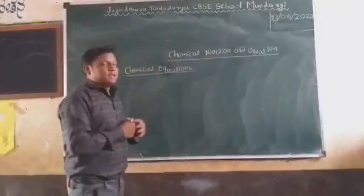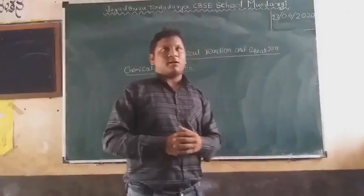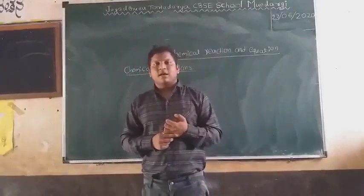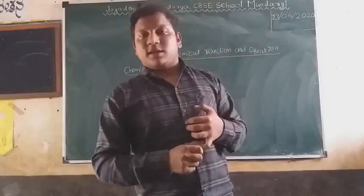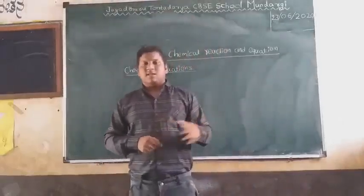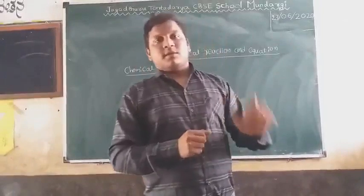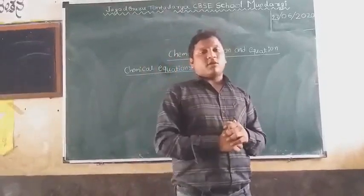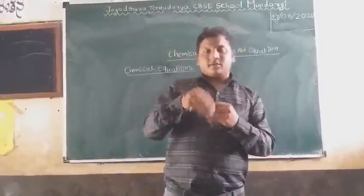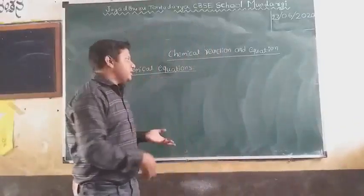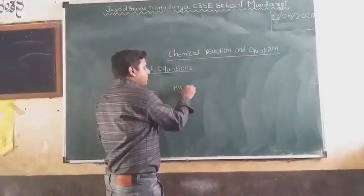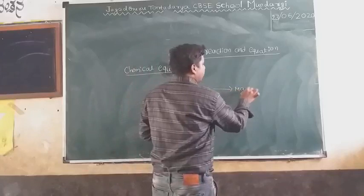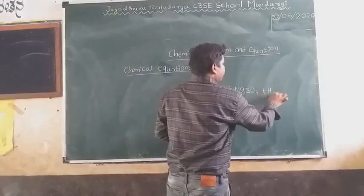There is one more point about chemical reactions. Just take an example: when solid magnesium reacts with sulfuric acid, it forms magnesium sulfate with the liberation of hydrogen gas. This is one type of explanation. Instead of writing it all in words, I can also write it as: when magnesium reacts with H2SO4, it gives MgSO4 with the liberation of H2 gas.